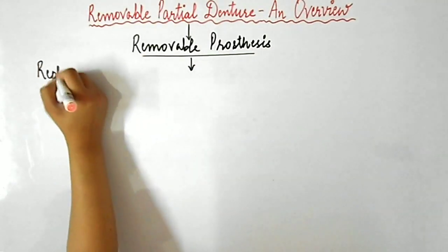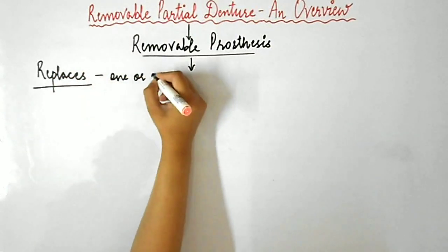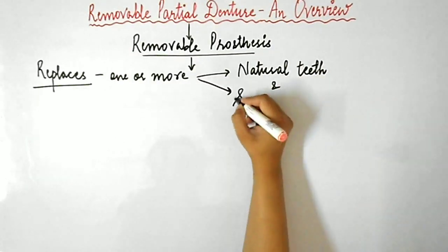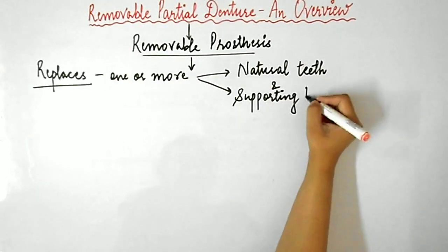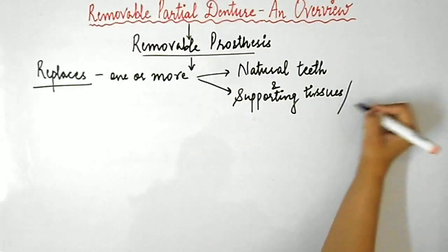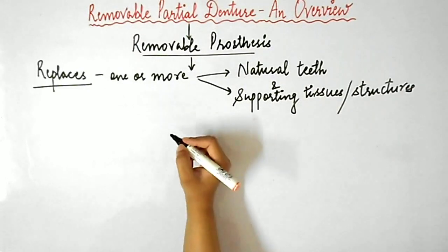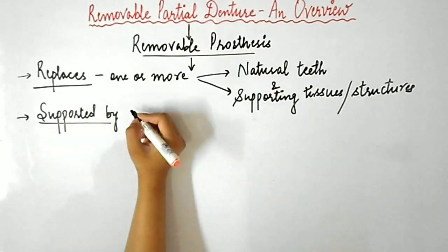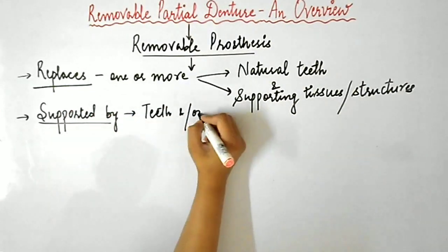Removable partial denture is basically a removable prosthesis that replaces one or more, but not all, of the natural teeth and supporting structures, and it is supported by teeth or mucosa. RPD is a prosthesis that can be removed and replaced in the mouth by the patient himself.